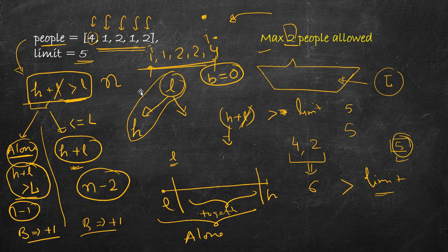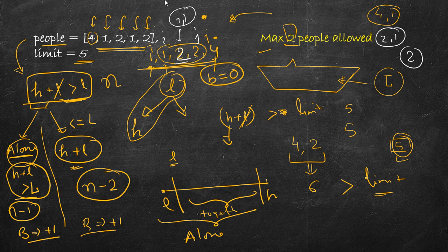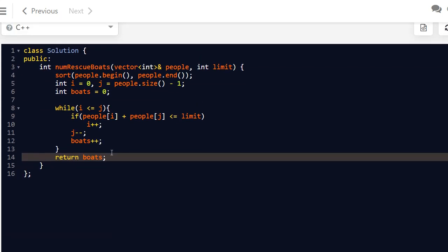Let's trace through the example. After sorting we get [1, 1, 2, 2, 4] with limit 5. First: 4 plus 1 equals 5, within limit, so they go together — one board, i moves right, j moves left. Next: 2 plus 1 equals 3, less than limit, so they go together — two boards. Now i and j are both at the middle element 2. Since 2 is less than the limit, 2 goes alone — three boards. So the answer is 3.